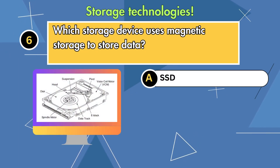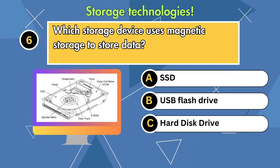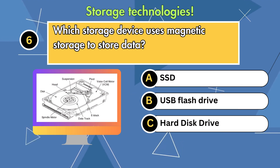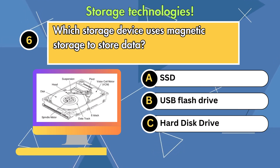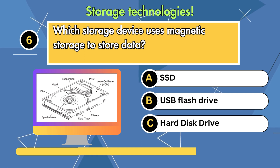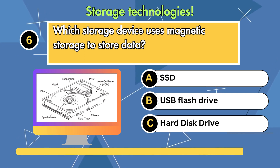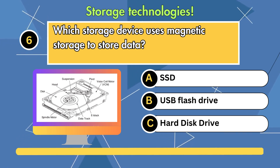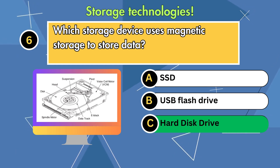Question 6. Which storage device uses magnetic storage to store data? Option 1: SSD. Option 2: USB flash drive. Option 3: Hard disk drive. Answer is hard disk drive.